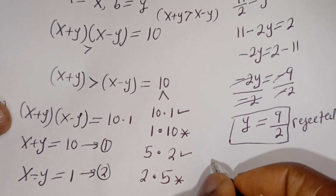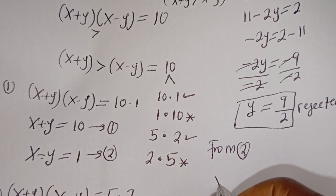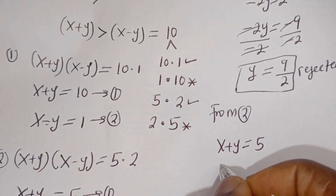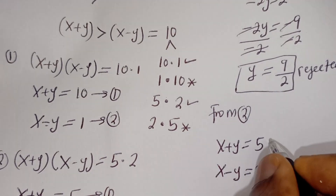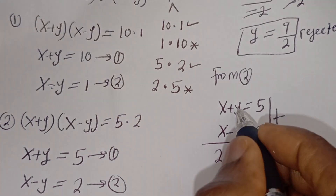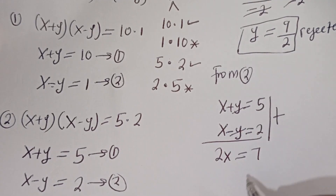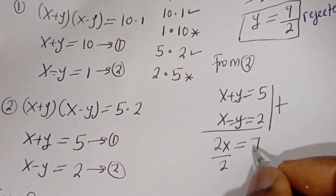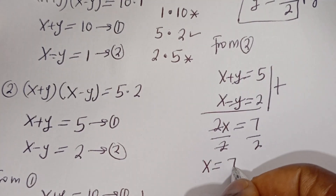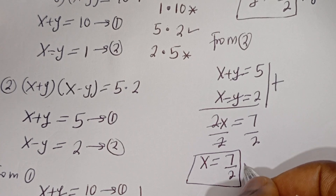Now let's consider Case 2. We have X plus Y is equal to 5 and X minus Y is equal to 2. Adding the two equations: 2X, and Y minus Y cancels, equals 5 plus 2, which is 7. Dividing both sides by 2, X is equal to 7 over 2. This is not a natural number, so it is rejected.